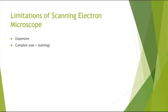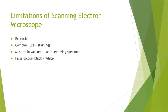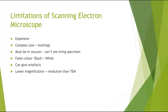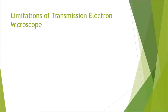Limitations of the scanning electron microscope: it is expensive and complex to use, with a complex staining process. It must be used in a vacuum, so you cannot observe living specimens — specimens must be dead. You can only see black and white images, and it can produce artifacts, which are abnormalities rather than actual organelles. Its magnification and resolution are still lower than the transmission electron microscope.